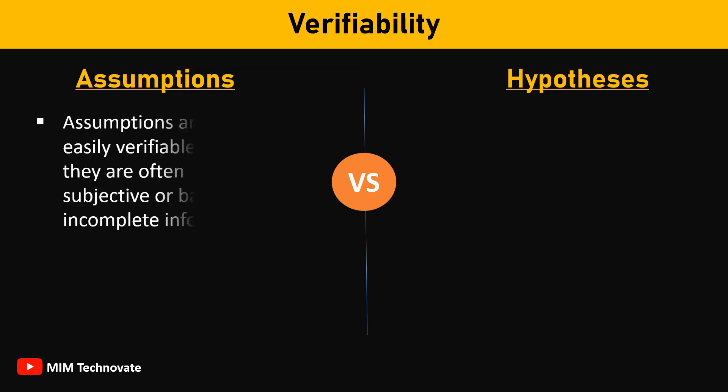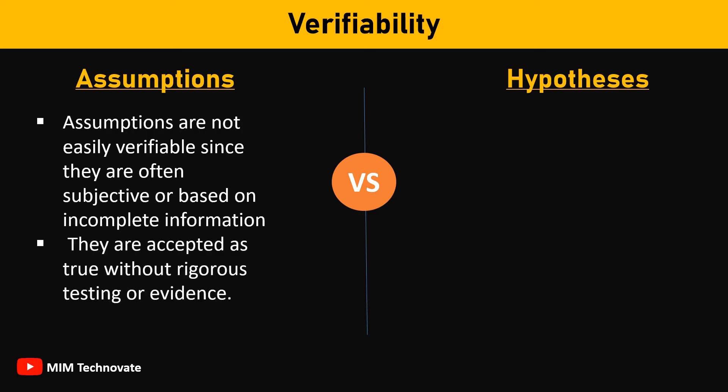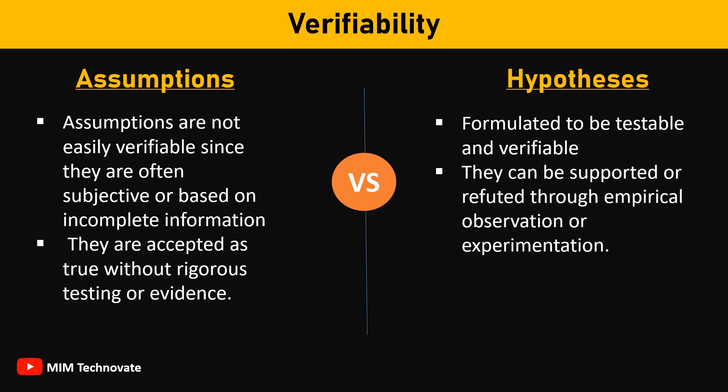Verifiability: Assumptions are not easily verifiable since they are often subjective or based on incomplete information. They are accepted as true without rigorous testing or evidence. On the other hand, hypotheses are formulated to be testable and verifiable. They can be supported or refuted through empirical observation or experimentation.